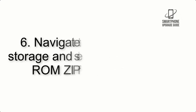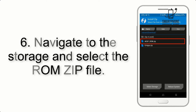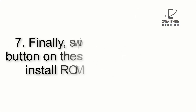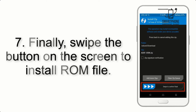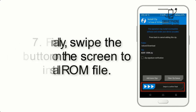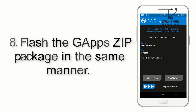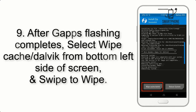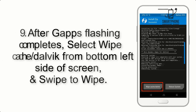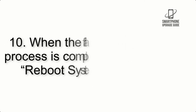Step 5: Go back to the recovery main screen and tap on the Install button. Step 6: Navigate to the storage and select the ROM zip file. Step 7: Swipe the button on the screen to install the ROM file. Step 8: Flash the GApps zip package in the same manner.